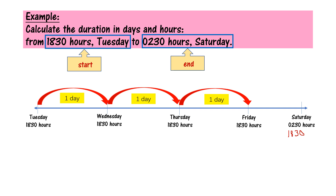So, means that the answer is in hours — not in day. Jawapannya dalam hours, bukan dalam days lagi. We need to calculate how many hours from 18.30 Friday to 00.30 Saturday. Yang ini petang — 6.30 petang. Yang ini Saturday pagi — pukul 2.30 pagi.